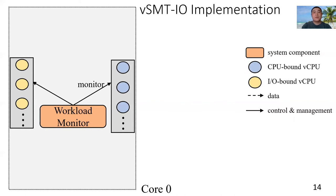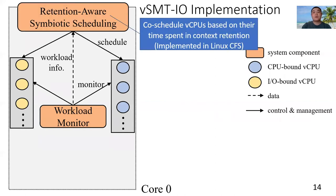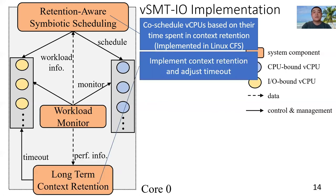At the beginning of each time period, the retention-aware symbiotic scheduling component co-schedules VCPUs in different categories on two different hardware threads on each core. This component is implemented at the host level based on Linux's Completely Fair Scheduler.